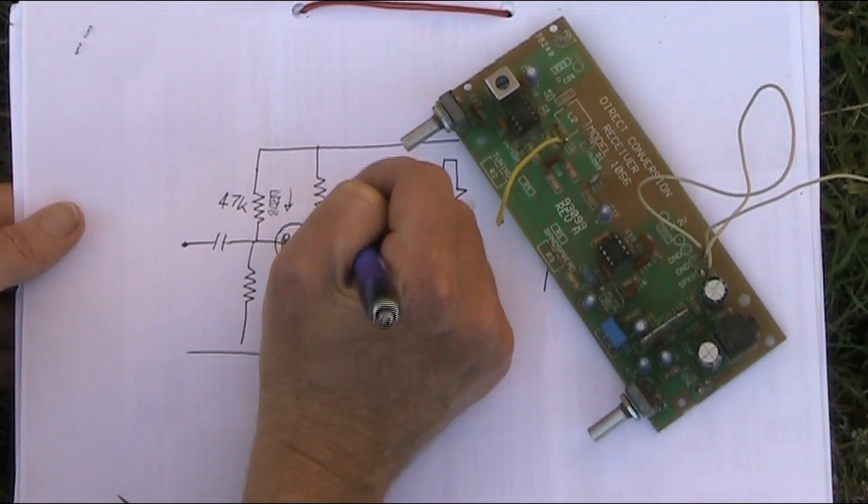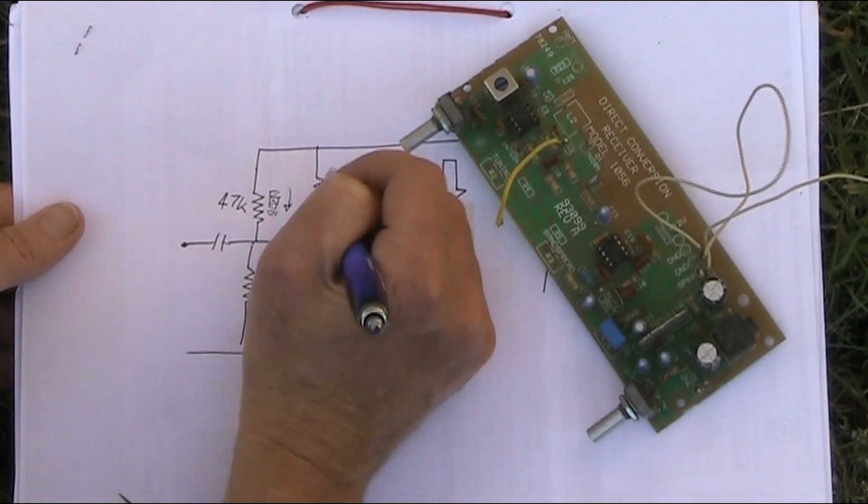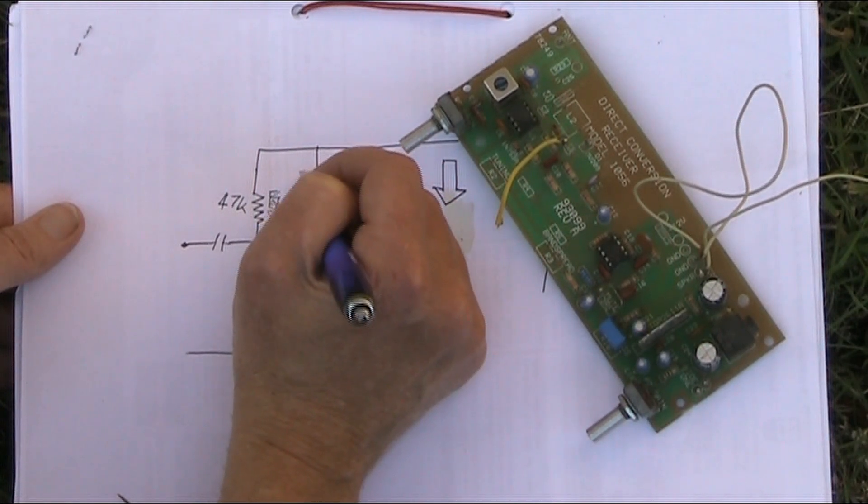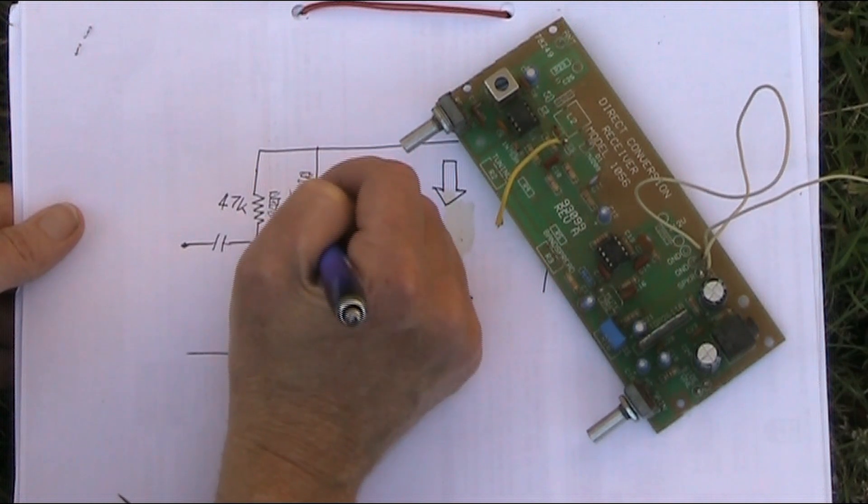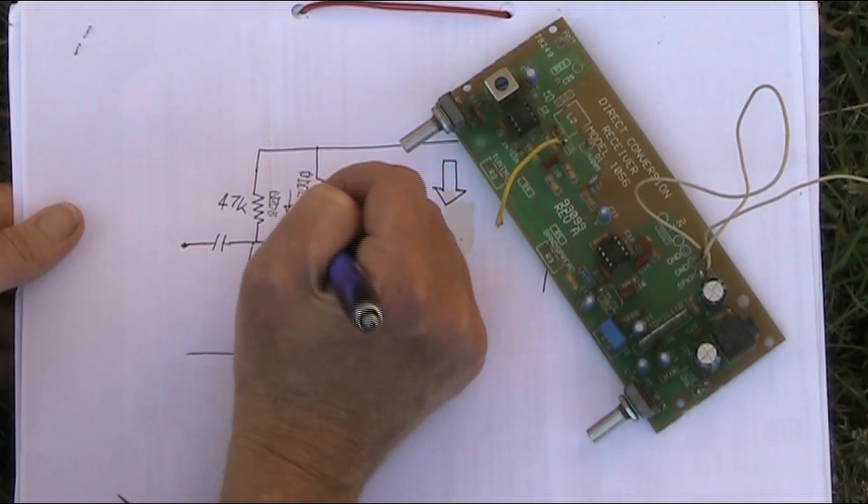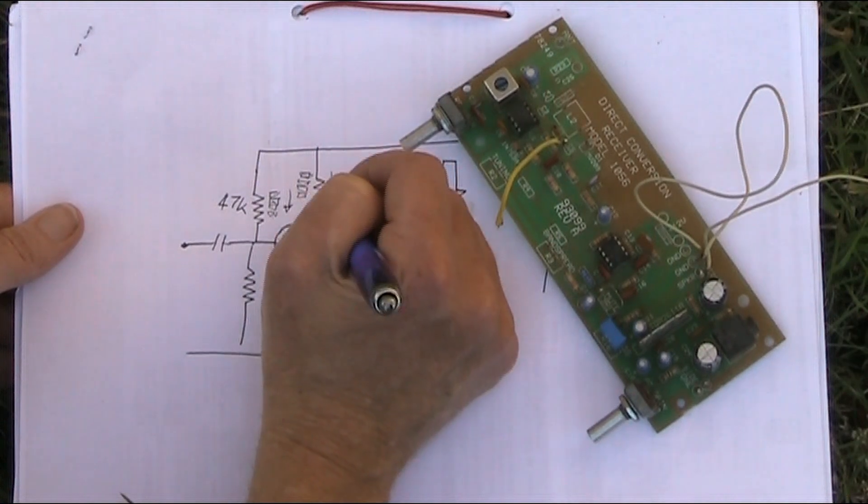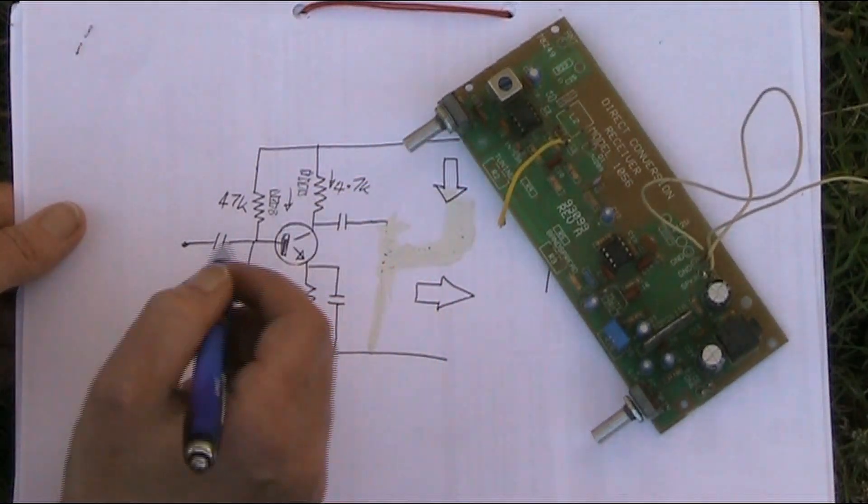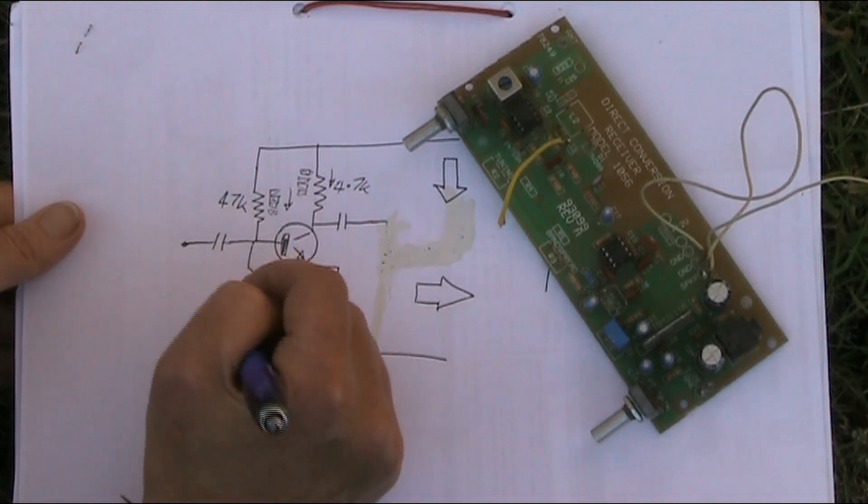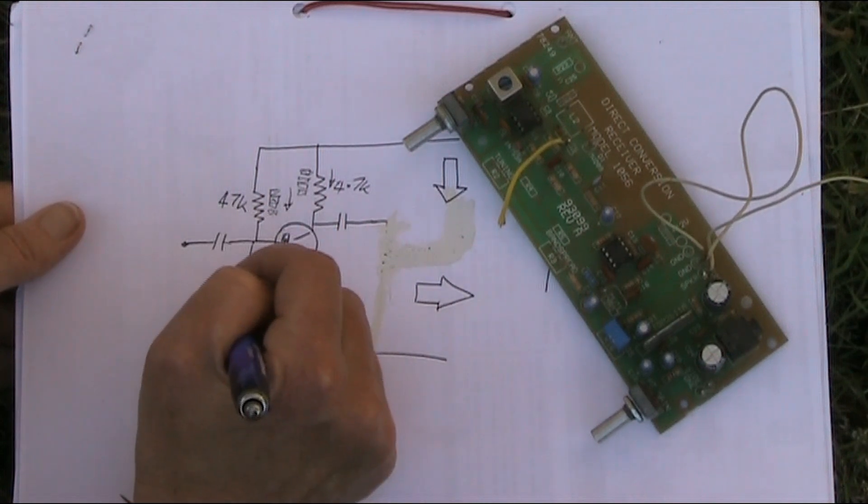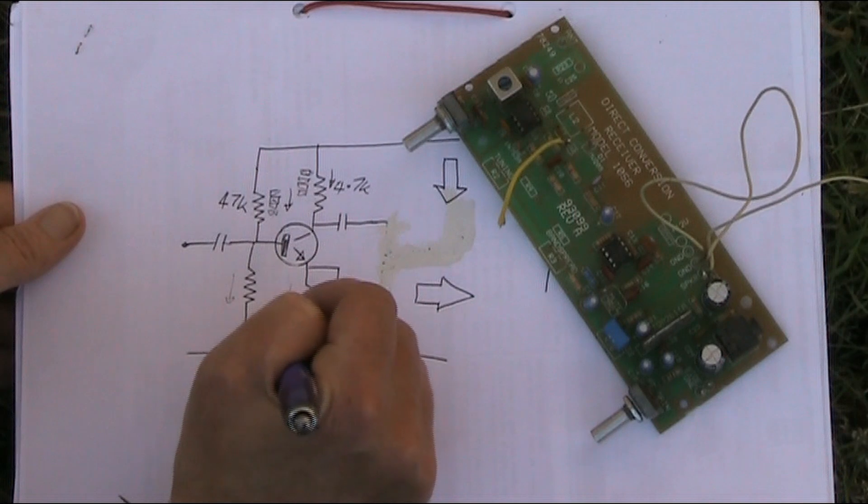Let's say this is 4.7k, in which case it would be yellow is 4, and then violet, and then red, and then gold, whatever. So again, you're reading the value this way. And same with all the resistors down here, top to bottom in the circuit.